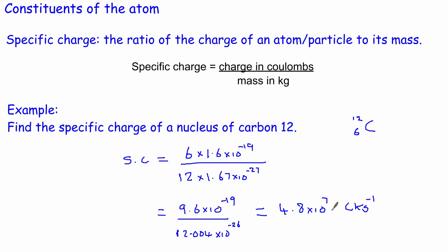So in this video we had a quick recap of the important parts of an atom, looked at some properties, and defined an isotope. We then looked at the new quantity of specific charge, which is charge divided by mass, and worked through two examples. Specific charge is a common exam topic potentially worth three marks, so it's definitely something you need to get your head around. Thank you very much for watching, and I'll see you again soon.